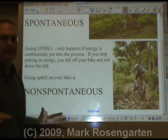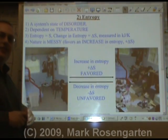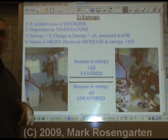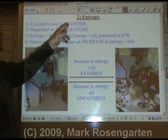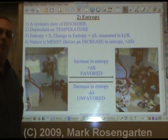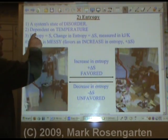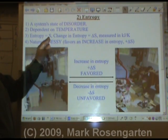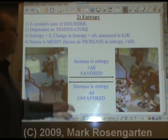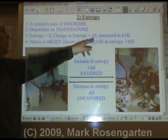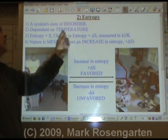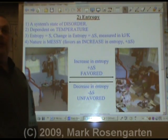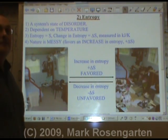One of the factors that decides whether a reaction happens or not is entropy, which is a system's natural tendency to go towards a state of disorder and randomness. Entropy is dependent on the system's temperature. Entropy is given the symbol S, as in mess. And the change in entropy is referred to as delta S — delta is change, S is entropy — and it's measured in kilojoules per kelvin. For this course, you will not be required to do any calculations involving delta S.